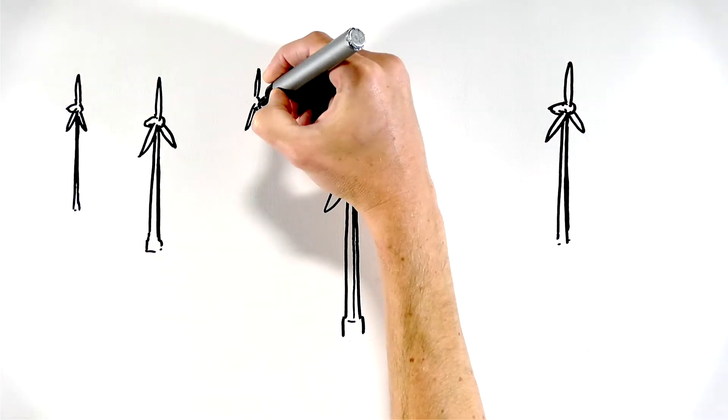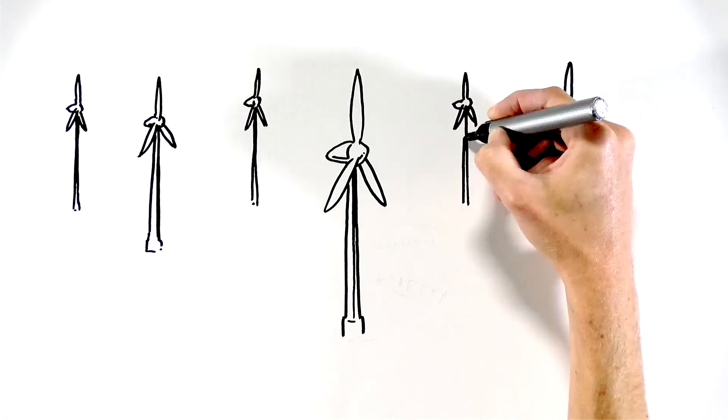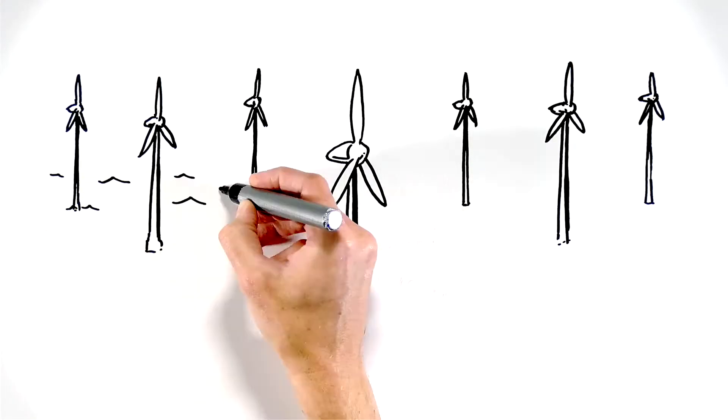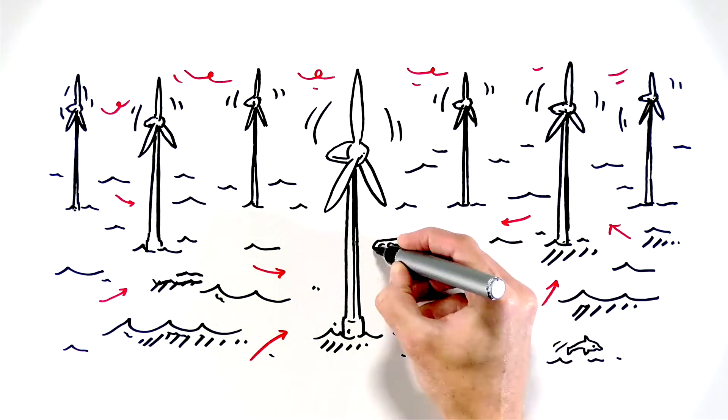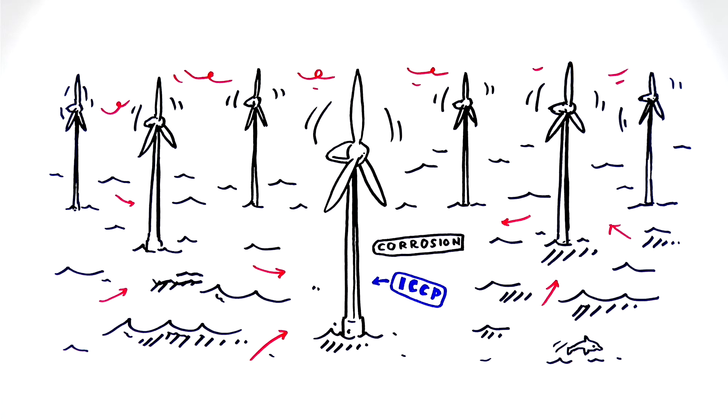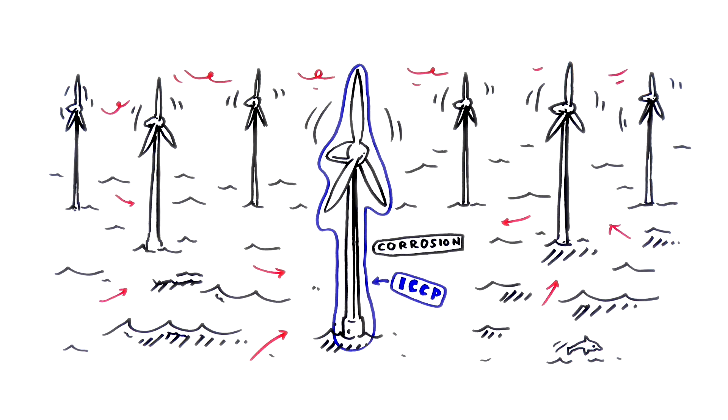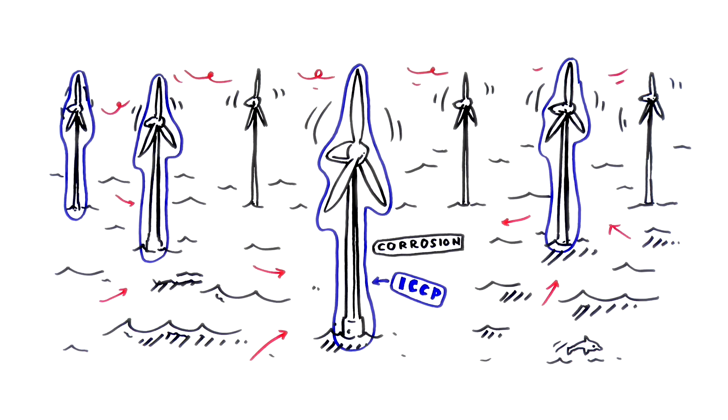When wind turbines started being built in our seas and oceans, the traditional methods of protection left a major carbon footprint on the surrounding ecosystems. It was Corrosion who introduced ICCP to this sector and they became the market leader for years and years. Even now they're still going strong.